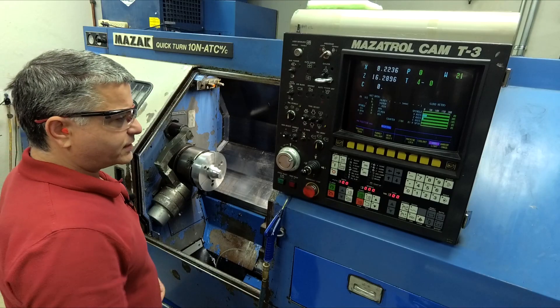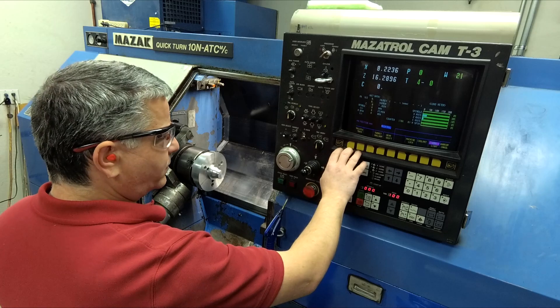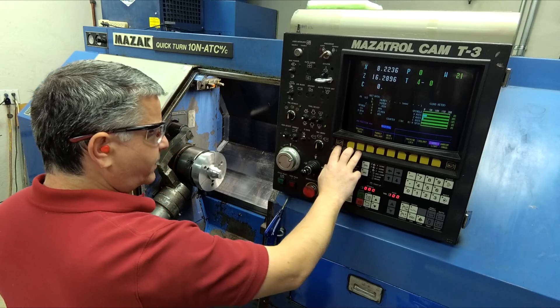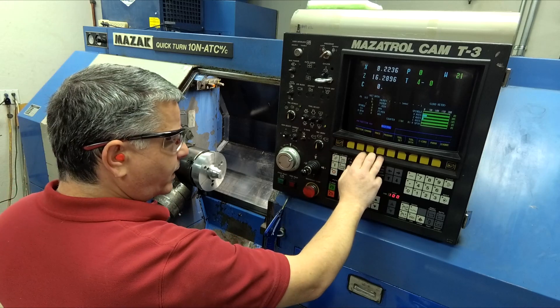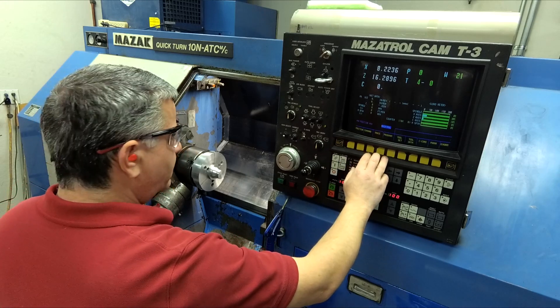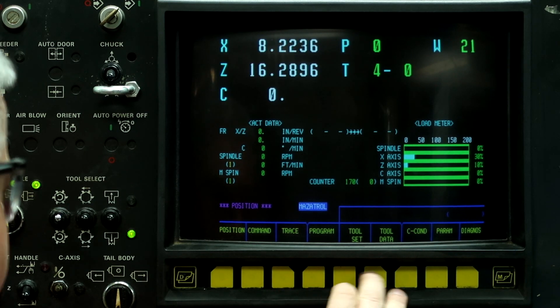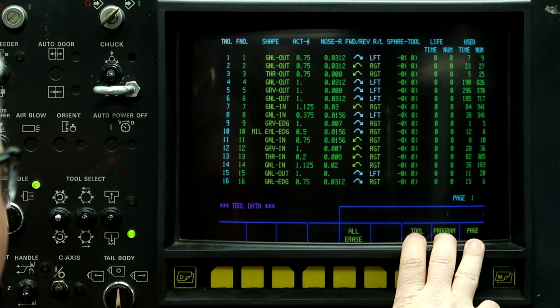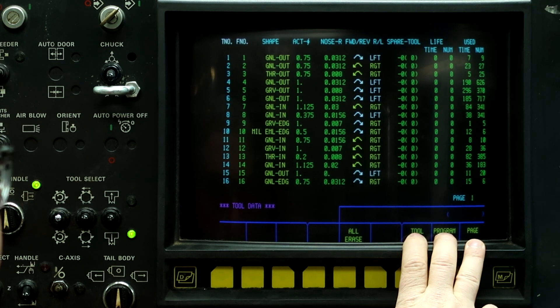Alright, so the first thing we're going to do when we set a tool is install it into the machine. For this example, I'm going to use an OD turning tool, which is already in the machine, but we need to put the tool data in and we're going to reset tool number four.